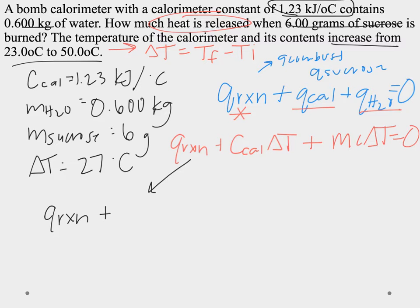So C_cal is my calorimeter constant, 1.23 kilojoules per degree Celsius. I'm going to include units so that way we can look at canceling. Delta T.